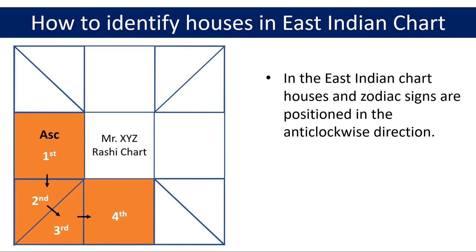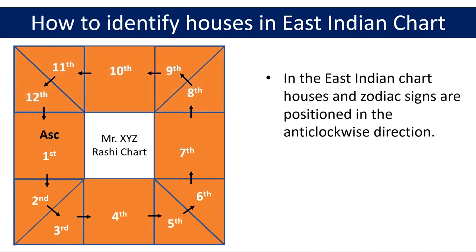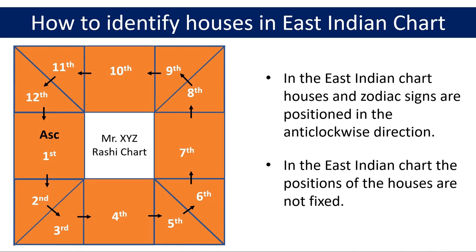Moving in the anticlockwise direction we come to the fourth house — it is the square next to the third house as shown in the chart. Continuing in the same way we get to the fifth house, the sixth house, the seventh house, and so on till we get to the twelfth house. These are the positions of the twelve houses in this particular East Indian chart. If the position of the ascendant or lagna was in some other house, then that would have become the first house, and the positions of the remaining houses would have been decided by taking an anticlockwise route from it. So the positions of the houses in the East Indian chart are not fixed but depend on the position of the ascendant or lagna, which becomes the first house, and subsequent houses are identified by moving in the anticlockwise direction.